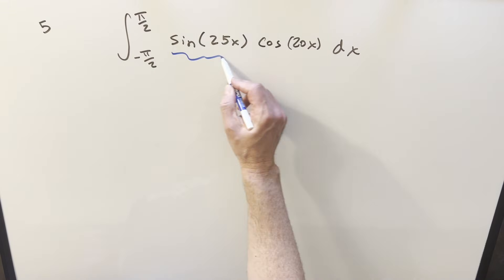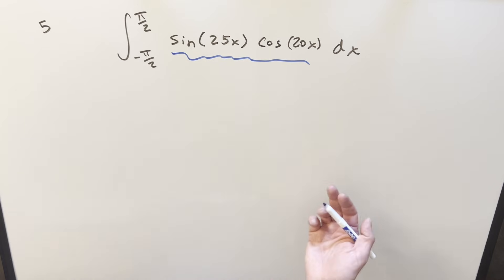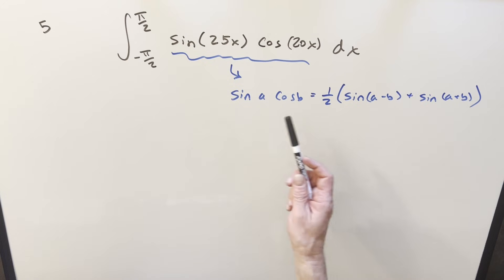Okay, well this is interesting right here. This is actually set up for one of our different angle formulas that we can use to reduce this and turn it into basically two terms or two integrals. Using this formula right here, we can reduce it to two sine terms, just the difference of the angles and the sum of the angles.